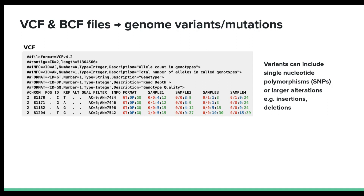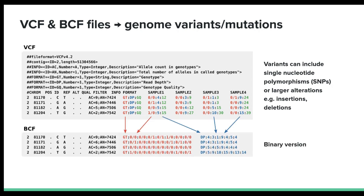The filter field in a VCF file indicates whether a variant passes certain quality filtering criteria. BCF files are binarized forms of VCF files that can be used to hold information more efficiently.